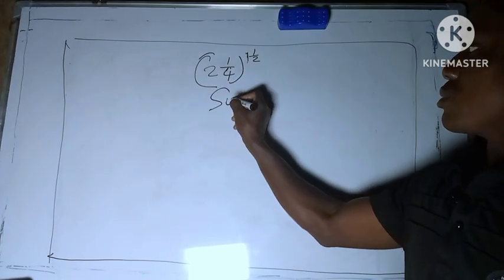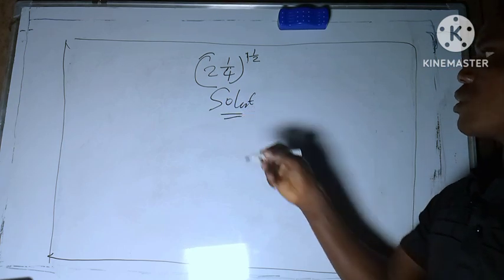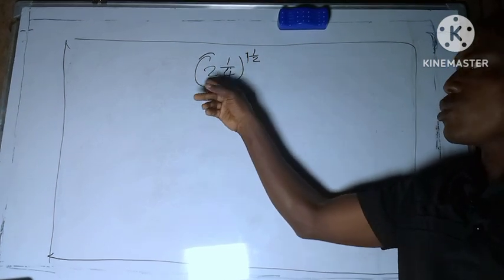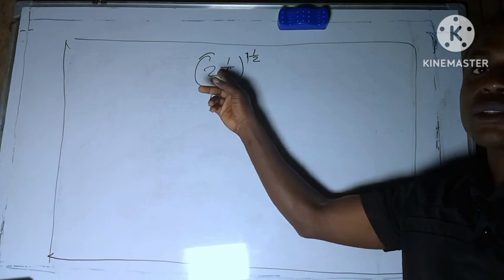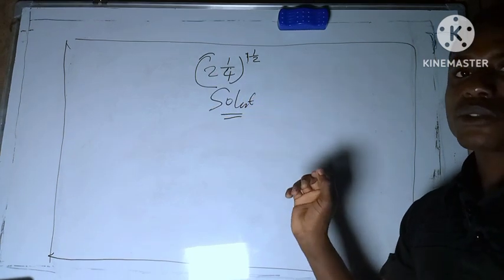So solution. The first thing we need to do is to open the bracket by changing this mixed fraction to improper fraction.